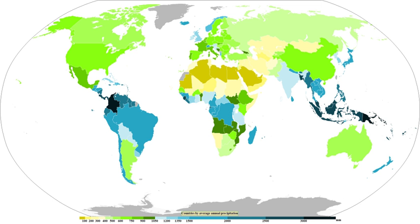The humid subtropical climate zone is where winter rainfall is associated with large storms that the westerlies steer from west to east. Most summer rainfall occurs during thunderstorms and from occasional tropical cyclones. Humid subtropical climates lie on the east side of continents, roughly between latitudes 20 and 40 degrees from the equator. An oceanic climate is typically found along the west coasts at the middle latitudes of all the world's continents, bordering cool oceans, as well as southeastern Australia, and is accompanied by plentiful precipitation year-round.